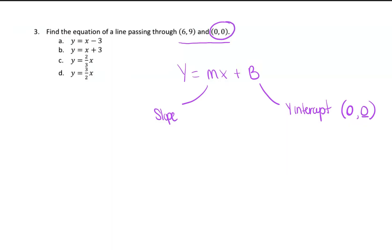In this equation, in this line, (0, 0) is our y-intercept. So b is going to be equal to 0. So we already figured out one piece of the equation. Now we have to figure out, okay, what is our slope going to be?